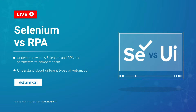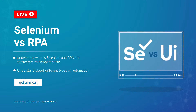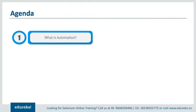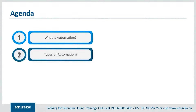So without any further ado, let's take a look at the agenda for this session. First, let's start by understanding what is automation and take a real-time example that demonstrates the advantages of it. Then we'll discuss about the different types of automation that exist, and after that I'll give you a brief introduction to automation testing and business process automation, which are the major fields where one can try to build a career.